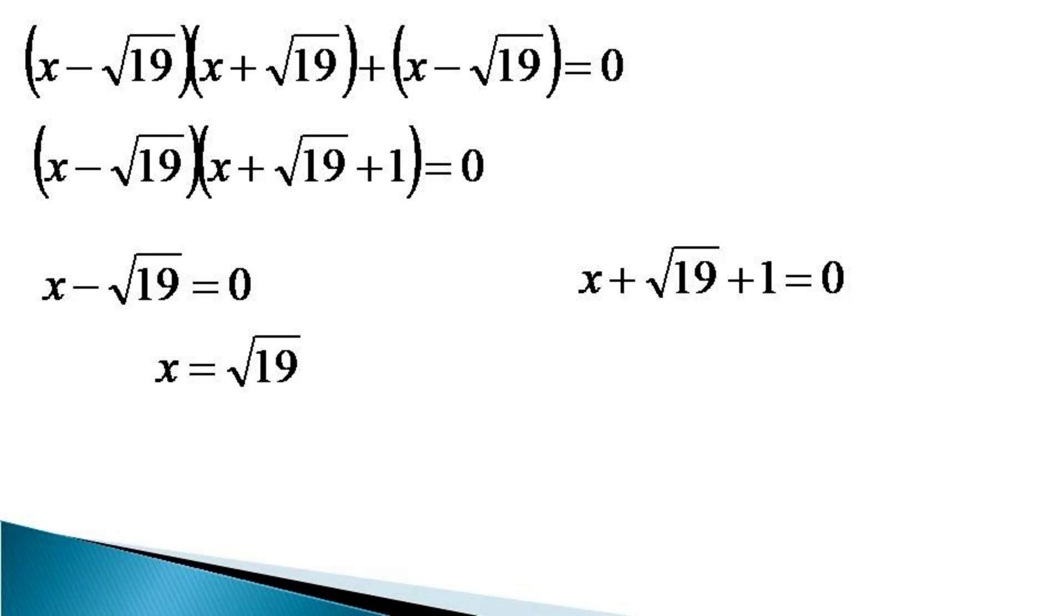This gives us the second root which is x is equal to minus root 19 plus 1. So we are having the second root through the method of factorization. Thanks for watching.